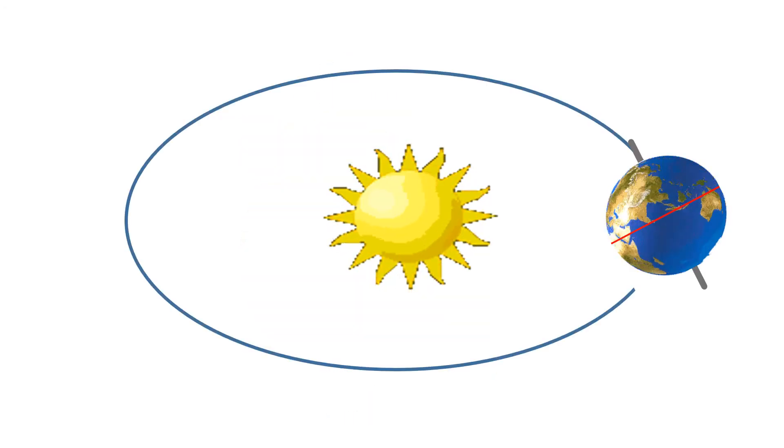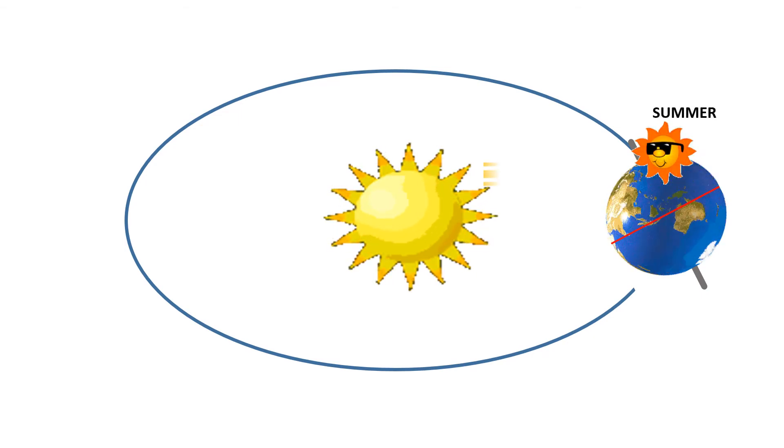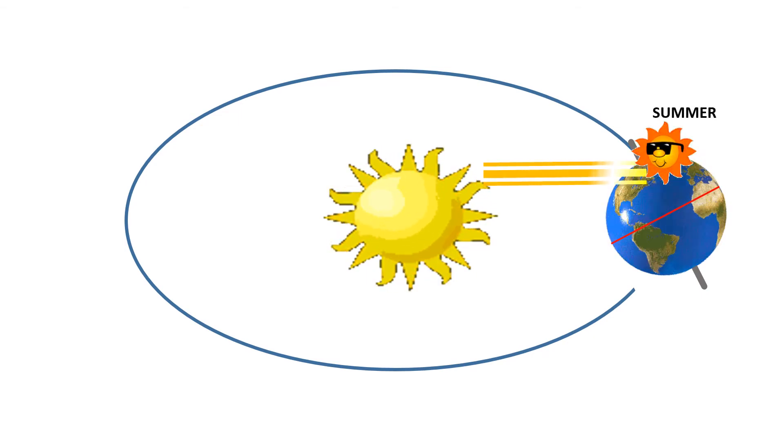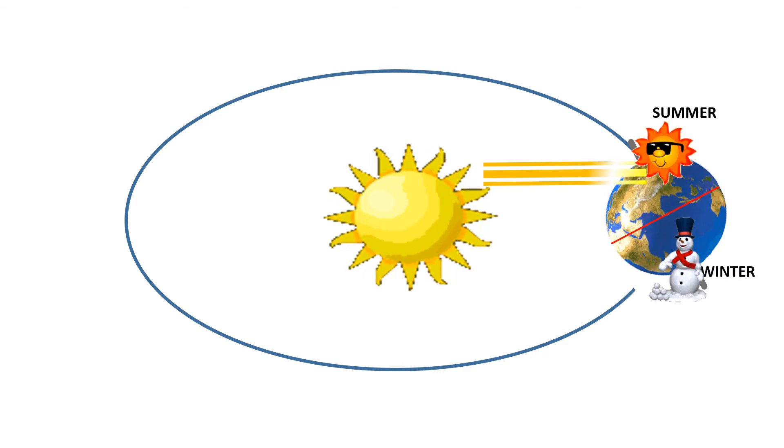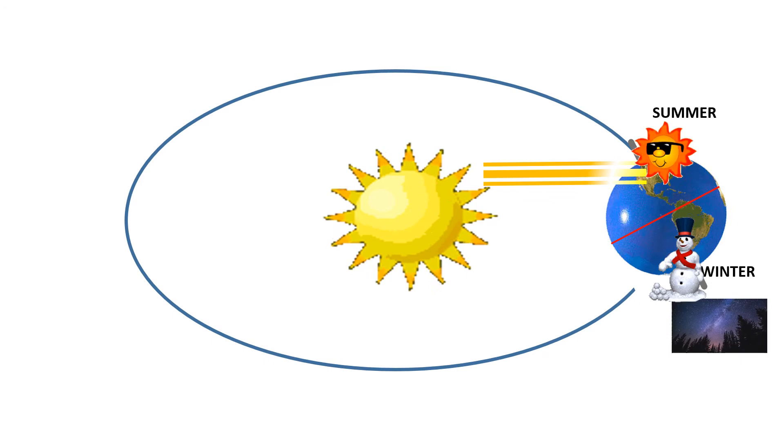For six months the North Pole experiences summer. There is 24 hours of sunlight, no nights. At this time the South Pole experiences winter. There is 24 hours of darkness, no daylight.